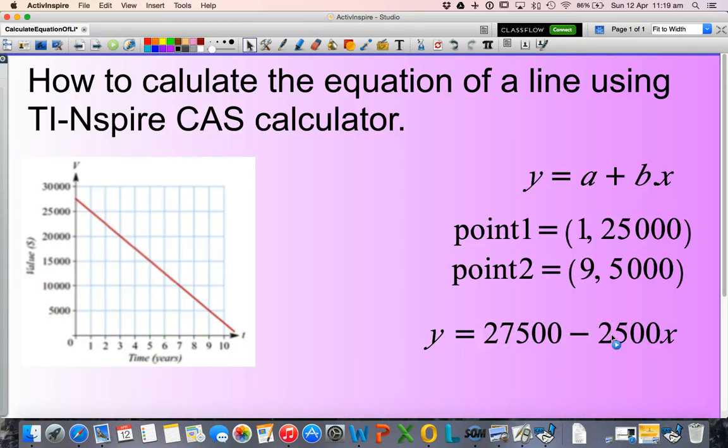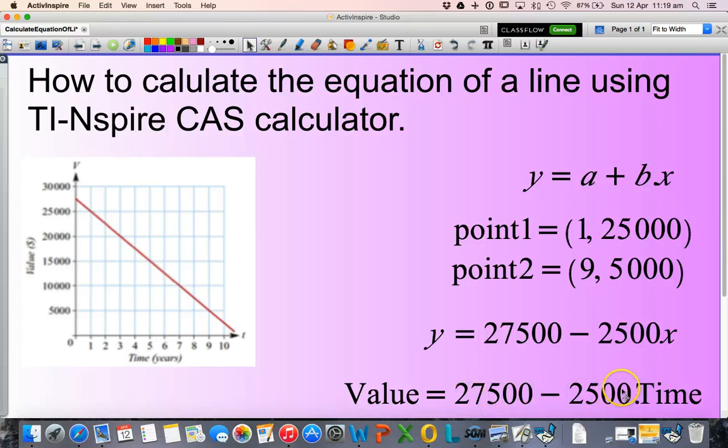Now we are almost finished. The only thing we need to realize is we're not dealing with x's and y's as our calculator would have given us the answer. We need to translate those to dollar values and time. So my value is equal to 27,500 minus 2,500 times, multiplied by the time.